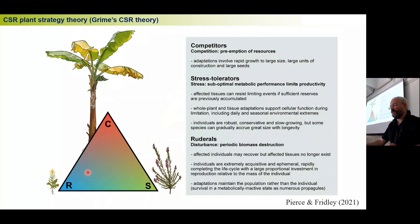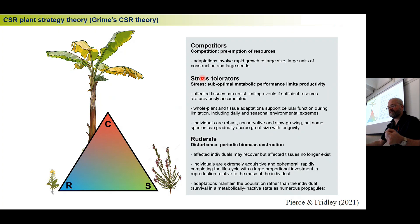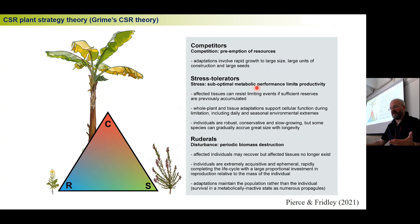So in this triangle we have the plant responses — being a competitor, a stress tolerator, or a ruderal R-selected plant — and also the environmental factors causing those responses: competition within the environment, abiotic stresses causing stress tolerance, and disturbance causing ruderalism. One of the nice things about this theory is that it looks at not just the plants but also the factors that cause that adaptation.